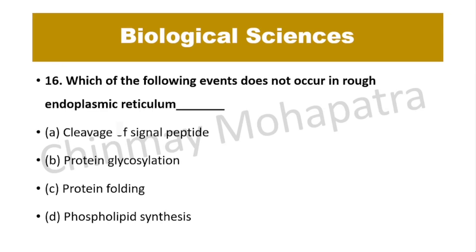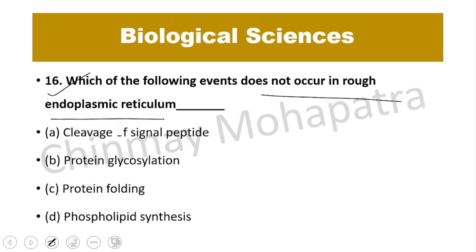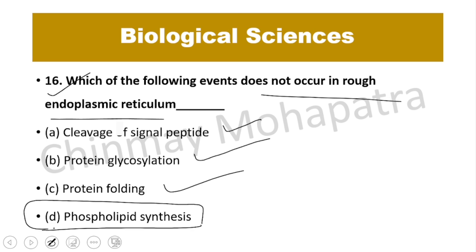Question number 16: Which of the following events does not occur in rough endoplasmic reticulum? Signal peptide processing, protein glycosylation, and protein folding all occur in rough ER. However, phospholipid synthesis does not occur in rough ER — that happens in smooth ER. So D is the right answer.